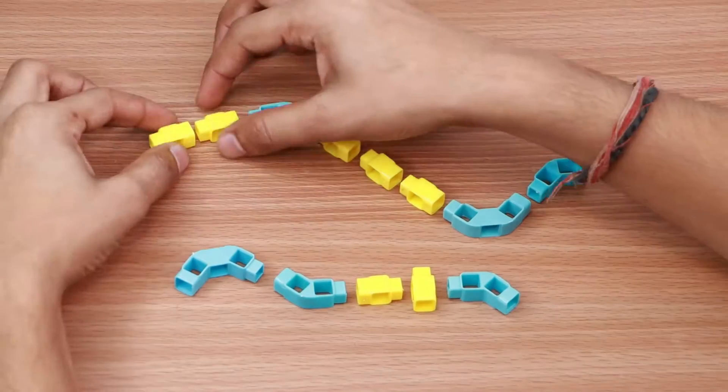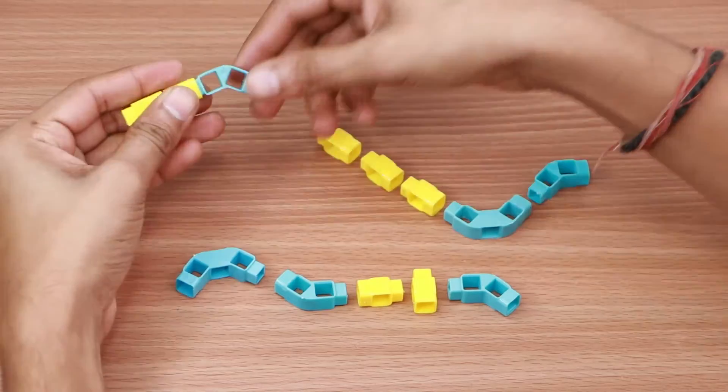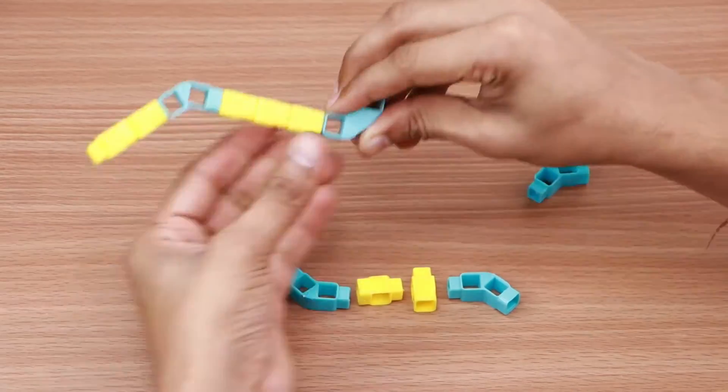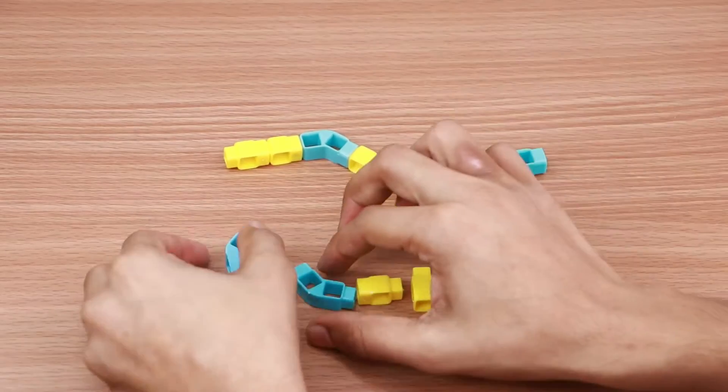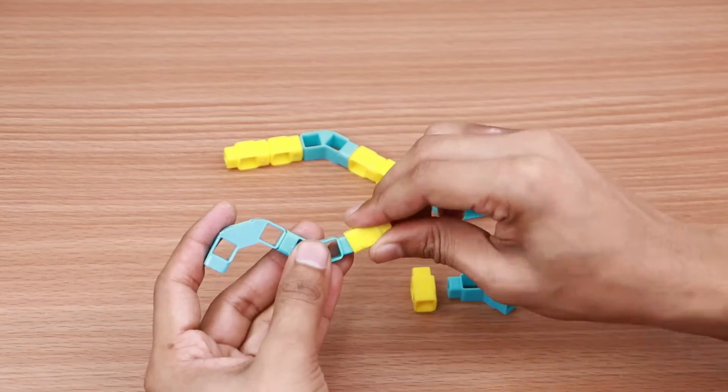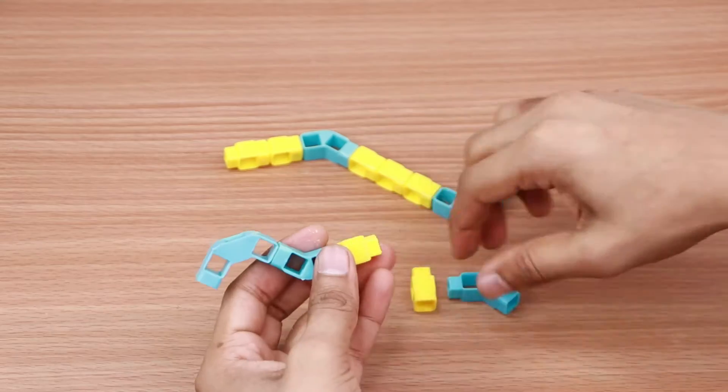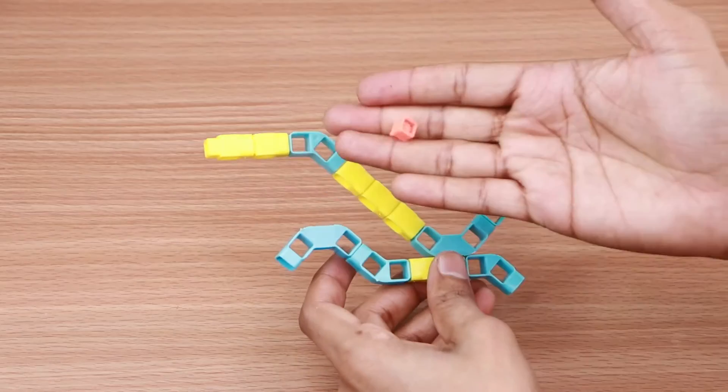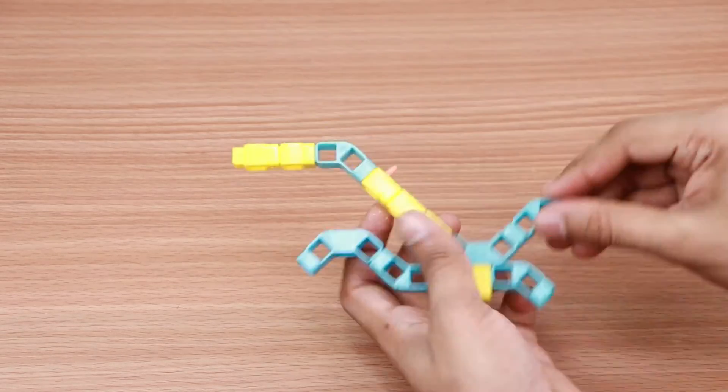Now attach five one-hole beams, two two-hole elbows and one three-hole elbow together. Next attach one three-hole elbow, two two-hole elbows and two one-hole elbows. Now connect these two together via the one-hole beam as shown. Attach one blocks holder to the structure.